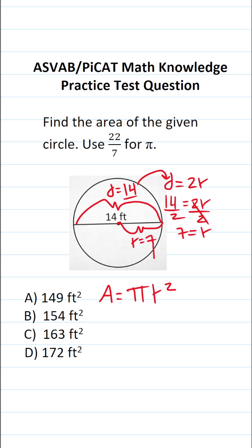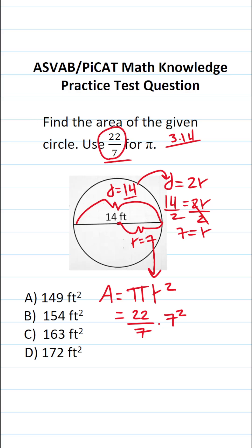Now that we know our radius is 7, we can plug it into the area formula. We're told to use 22 over 7 for pi, so this becomes 22 over 7 times 7 squared. On the test, you're either going to use 3.14 or they'll tell you to use 22 over 7 — in this case, we're using 22 over 7.